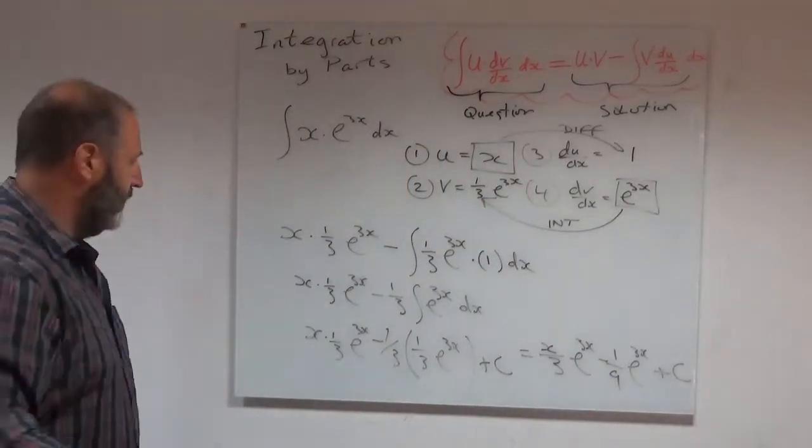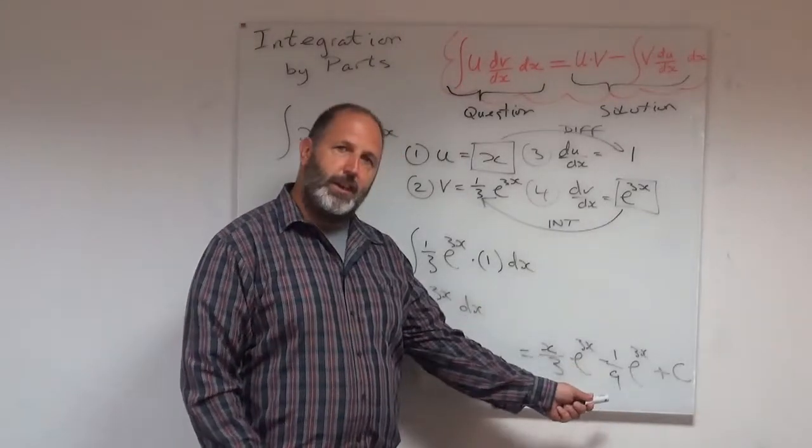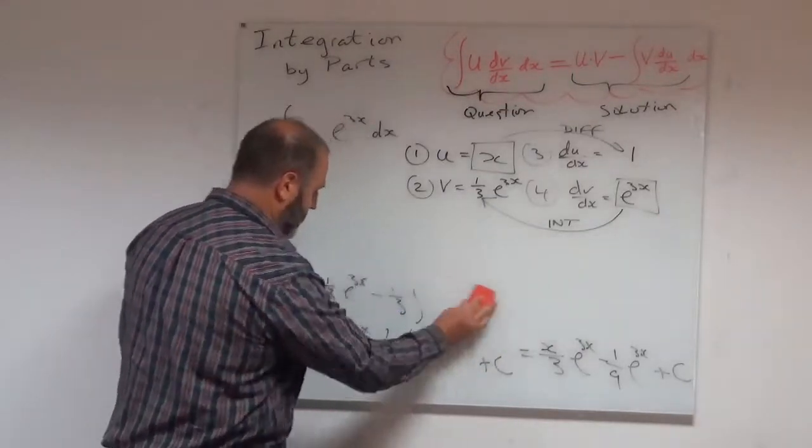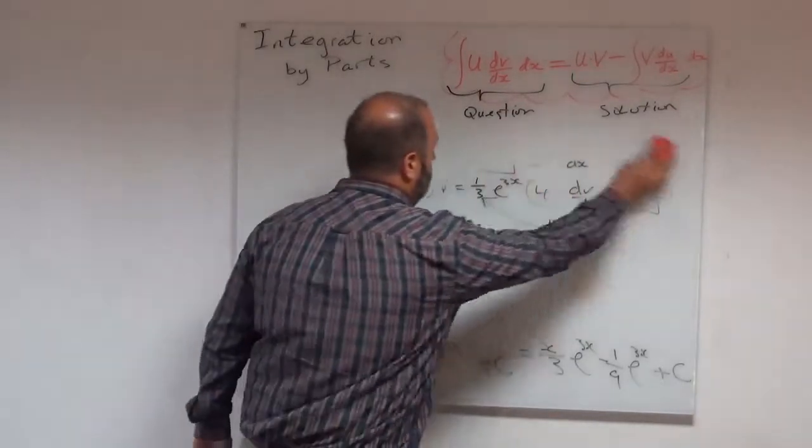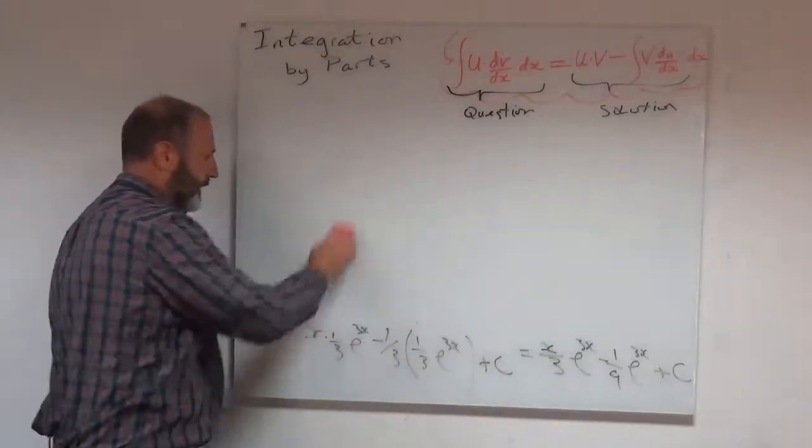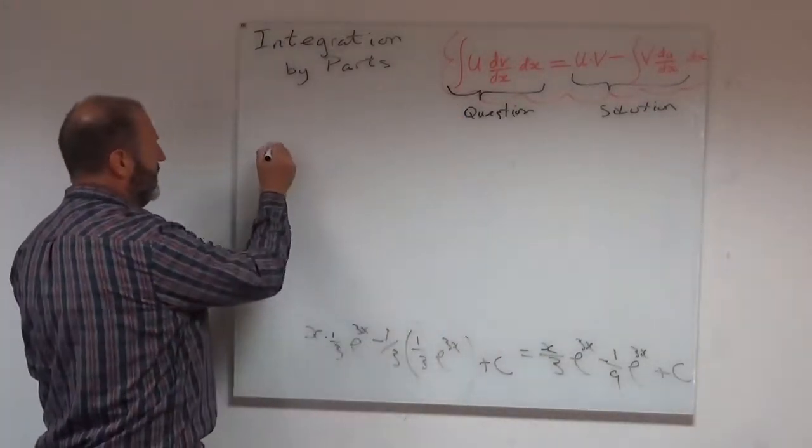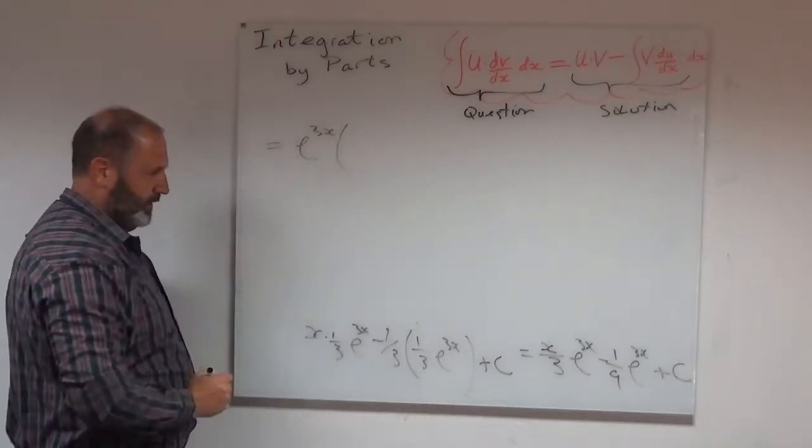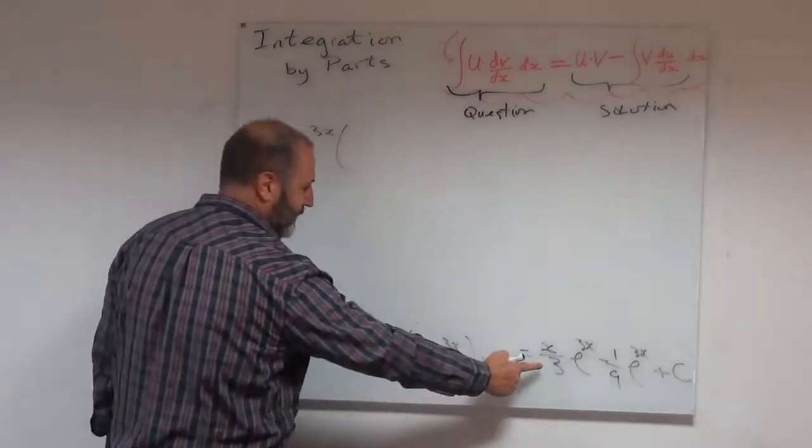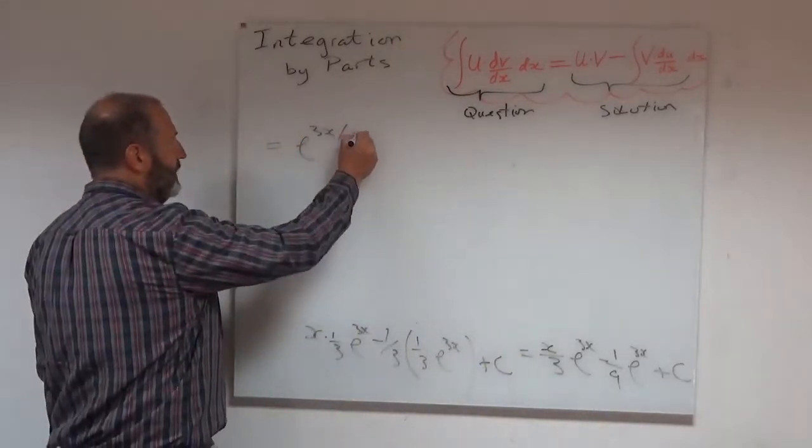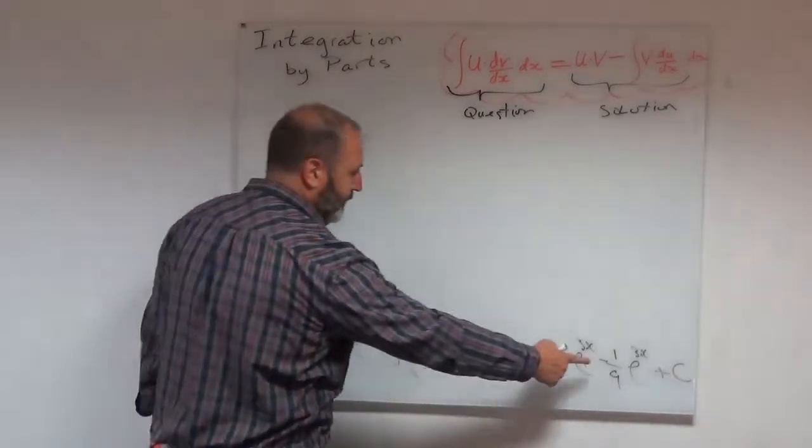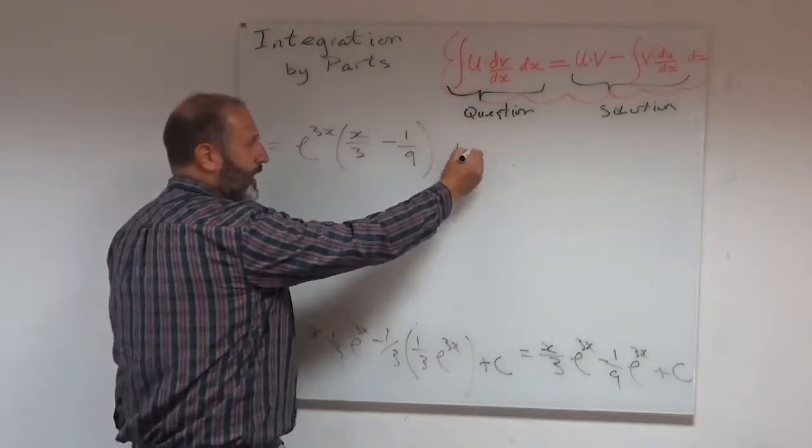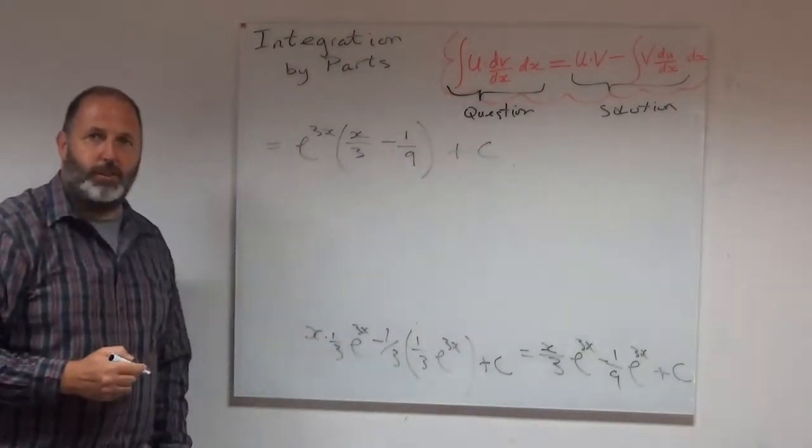What I might want to do is just spot I've got a common factor of e to the 3x and perhaps include that. So I'm just going to make a little bit of space and put that in. So all I would do to finish off is I would say my answer is and I can see I've got e to the 3x that's common. So I'm going to drag it out. If I take it out of this first term, I'm left with x over 3. And if I remove it from the second term, I'm left with minus 1 over 9. And then mustn't forget constants of integration plus c.